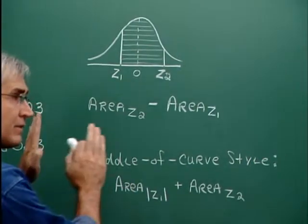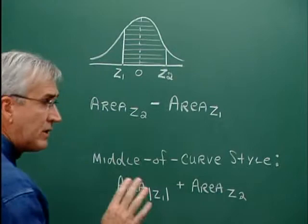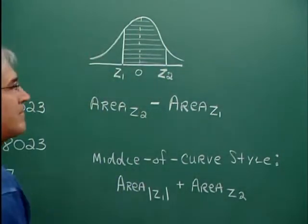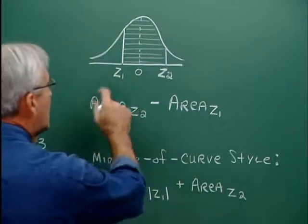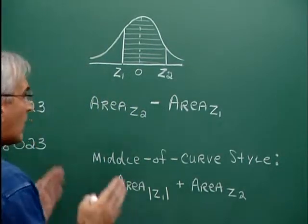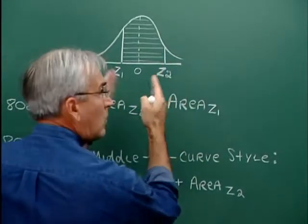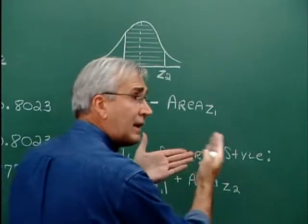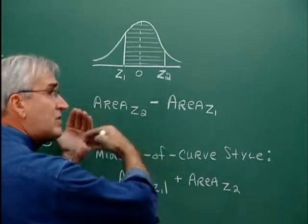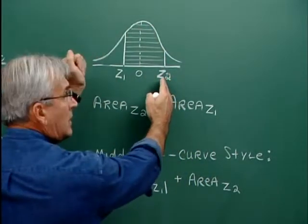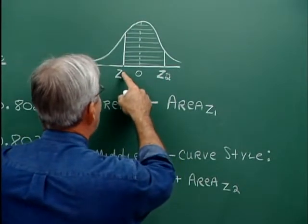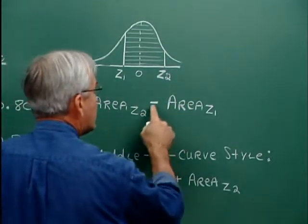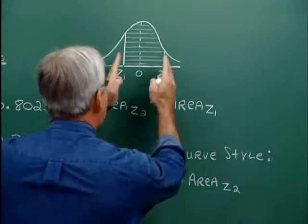When finding area between two z-scores using the left-tail style table, take the area corresponding to the larger z-score and subtract the area corresponding to the smaller z-score. The difference gives the area of the shaded region between them. This is the area associated with z-subscript 2 minus the area associated with z-subscript 1. With a middle-of-curve table, you add the two areas from center outward.